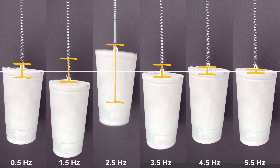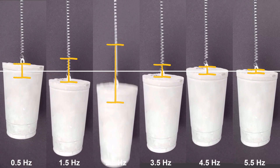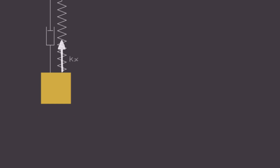Why? Just like before, let's start by making a model of our system. It'll consist of an ideal spring, a damper, and an external force, F0 cosine omega t, which is used to model the effect of the stepper motor.